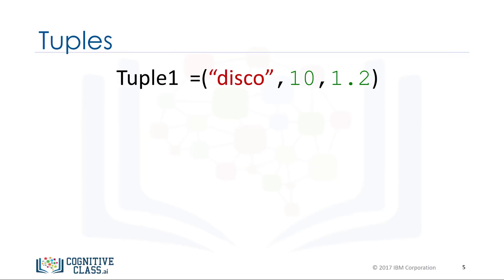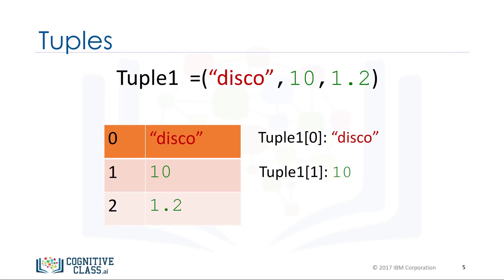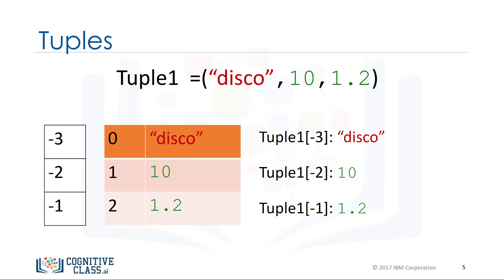Each element of a tuple can be accessed via an index. The following table represents the relationship between the index and the elements in the tuple. The first element can be accessed by the name of the tuple followed by a square bracket with the index number — in this case, zero. We can also use negative indexing in Python.